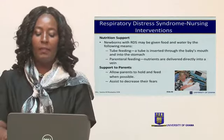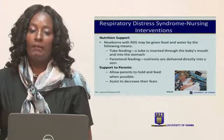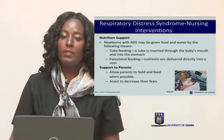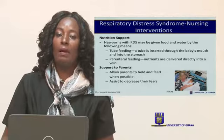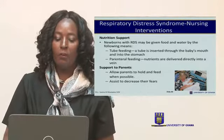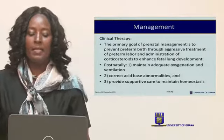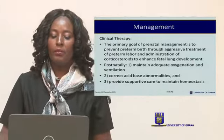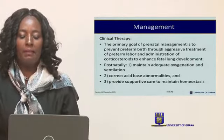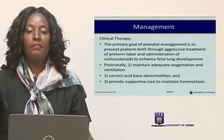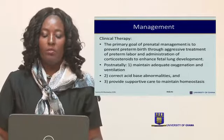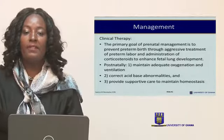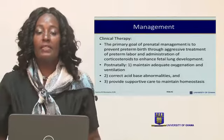Parents must be part of the care. Where the baby can tolerate feeding, allow parents to feed and hold the baby, involve them in care, and inform them at each phase. This reduces parental anxiety and helps them collaborate in giving full support. The primary clinical goal is to prevent preterm births through aggressive treatment of preterm labor and administration of corticosteroids to enhance fetal lung development.